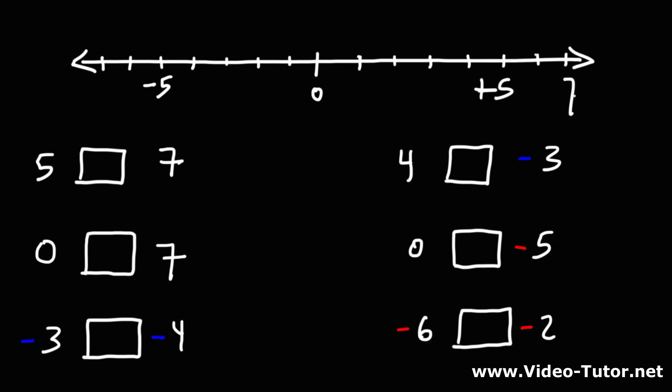So when we compare 5 and 7, 7 is to the right of 5 on the number line. Therefore, 7 has a higher value than 5.